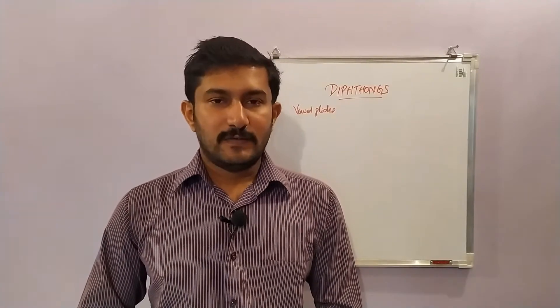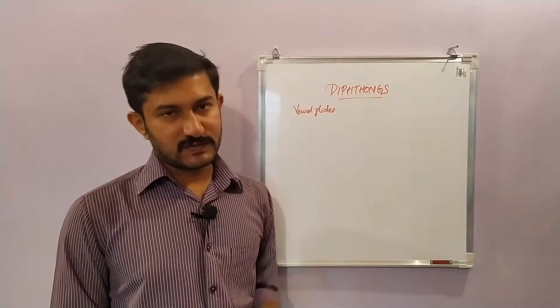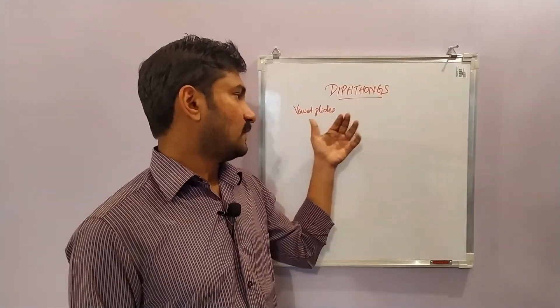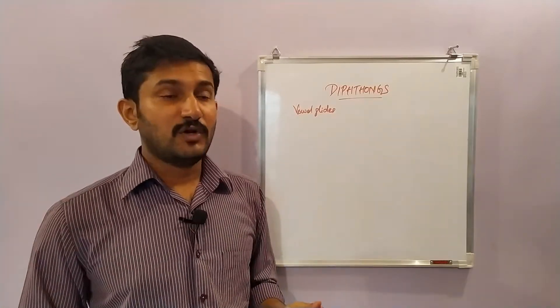So we discussed the twelve pure vowels. Now coming to the remaining eight sounds, diphthongs, otherwise called vowel glides. The pure vowels are monophthongs.